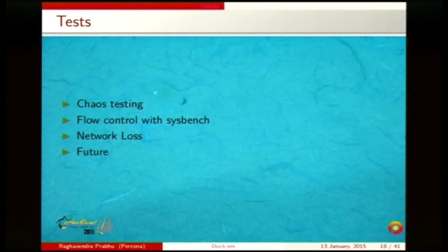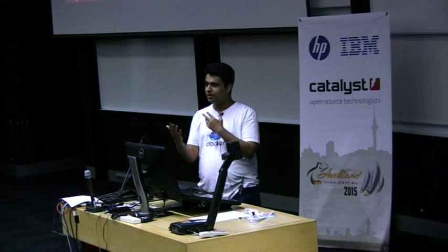Some of the tests I've listed: chaos testing is what Netflix introduced as chaos monkey — you have a distributed system and you randomly remove nodes, introducing rapid membership changes in the cluster. I call it 'chaos sapience' because it's not a monkey but an intelligent being introducing chaos. The length of time a node is away from the cluster determines whether it requires a full state transfer or an incremental one.